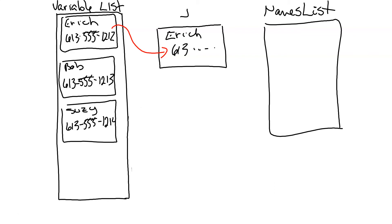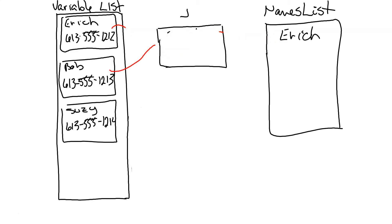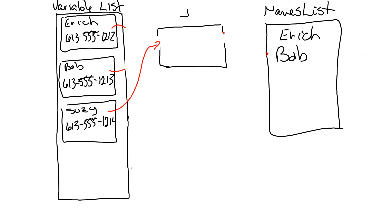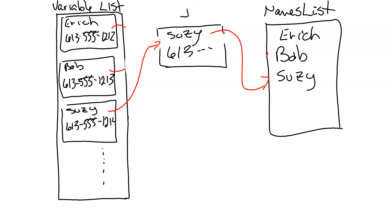Then we look at j and say what's the first item in that sub-list, which happens to be the name, and we put it into the names list. The process then moves to the next item — we get Bob and his phone number put into j. That's a sub-list we've pulled from the big list, and then we ask it to take just the first name and add that to the names list. Then it repeats that process again for the next entry — we get Susie, her name gets put into j along with her number, we take the first entry from that sub-list and add it into the names list, continuing all the way through.